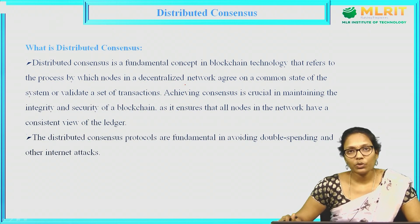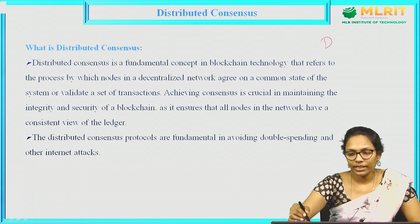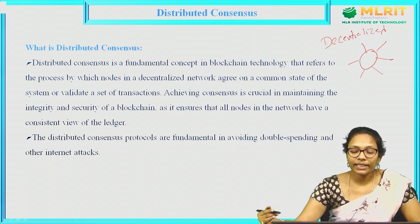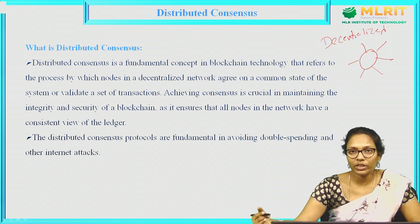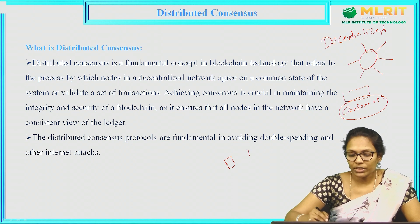In the previous videos, we have discussed about Consensus Protocol. So what is the need of consensus? As we know, blockchain has no central authority to monitor — it is decentralized. There is no central authority to monitor the actions. Then how to add the transaction to the block, or how to add the block to the blockchain without verification? If there is no central authority, who will verify the transaction? We have a procedure here — that is nothing but the consensus mechanism. Based on this consensus mechanism, all the nodes in the network will make an agreement.